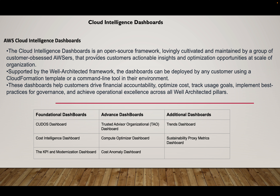Cloud Intelligence Dashboard is an open source framework created and maintained by customer-obsessed AWS. One of the good parts of it is that it provides customers with insights where you can take action and do optimization opportunities at the scale of an organization. So if you're running hundreds of accounts within an AWS org, then you can have one place where you can see everything from a cost perspective — like GP2 to GP3 conversion and all those things.